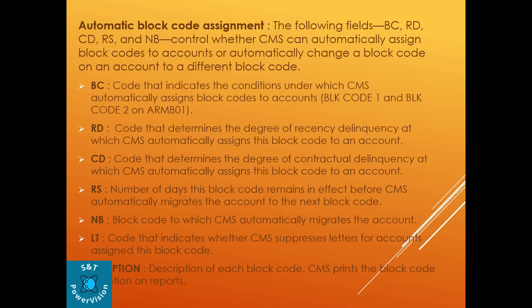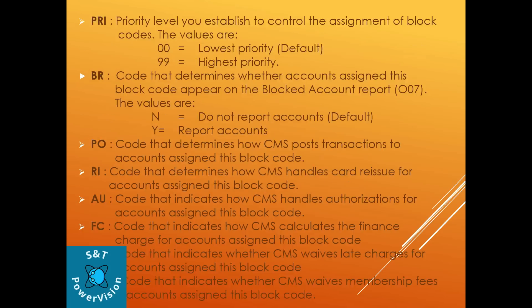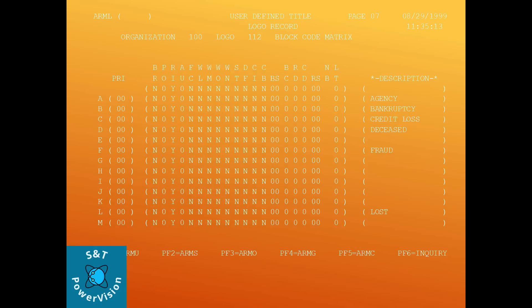RS is the number of days this block code remains in effect before CMS automatically migrates the account to the next block code. NB is the block code to which CMS automatically migrates the account. LT is the code that indicates whether CMS suppresses the letter for the account assigned this block code. Description is the description of each block code — CMS prints the block code description on reports. For the detailed field values on ARML page 0708, refer to the CMS screen manual or user manual, as covering all values in a video would be very lengthy.